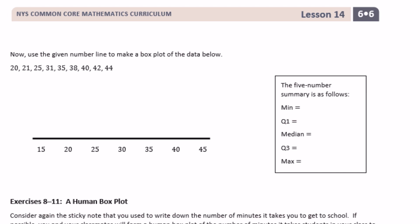Now use the given number line to make a box plot of the data below. So it gave us this little key over here to help us out. So our minimum is 20 and our max is 44. So let's start with there. So our minimum is going to be 20 and our max is going to be 44. So right about there. Now let's find our median. Median is 35. So our median. I'm going to draw a line at 35.